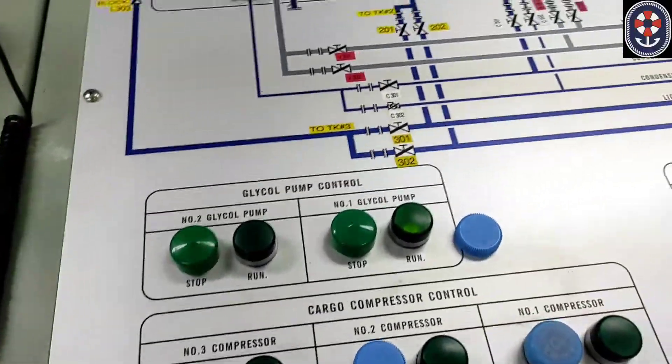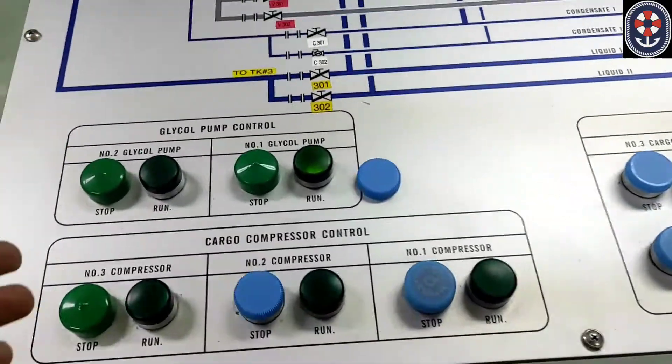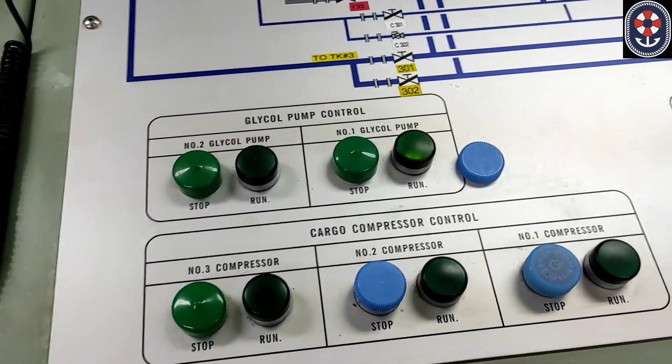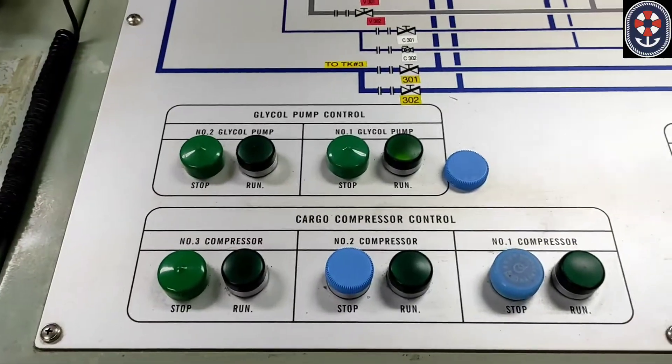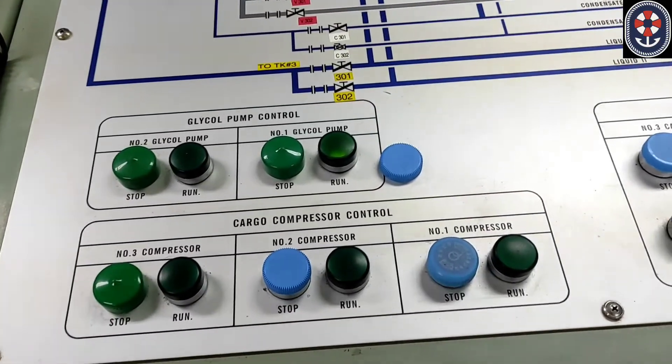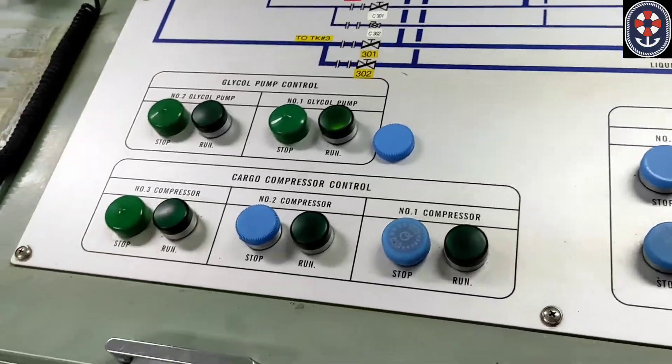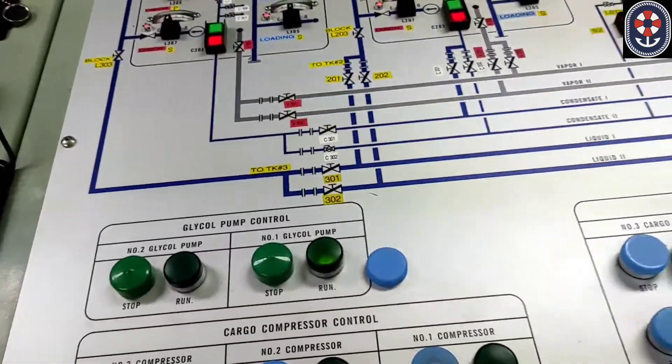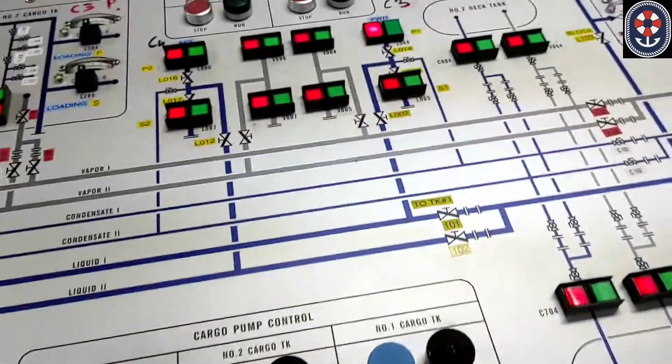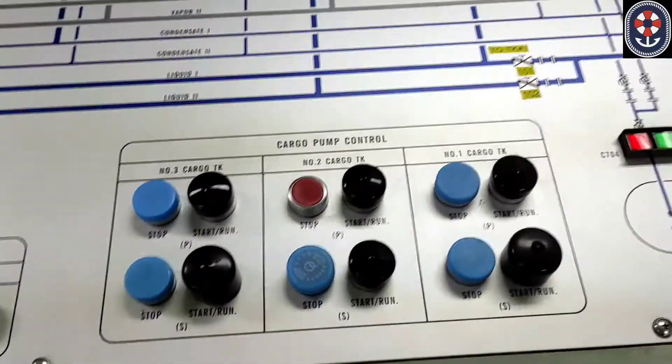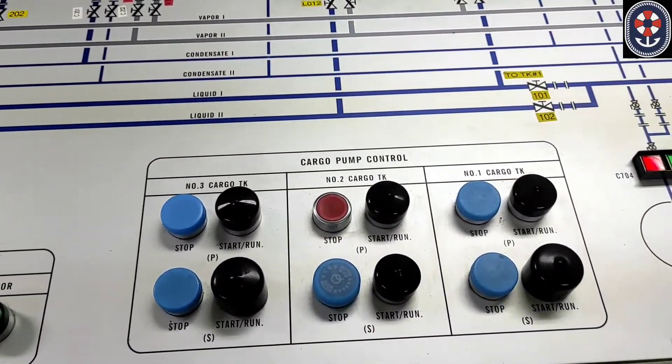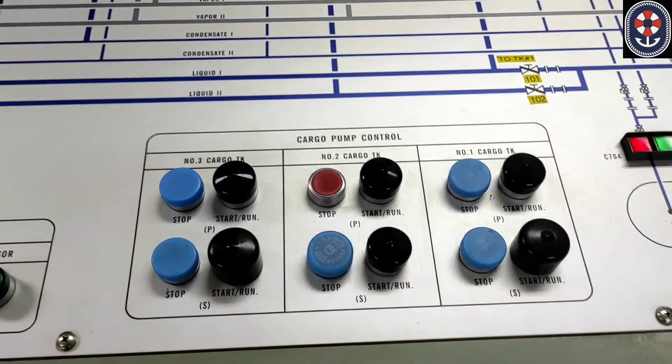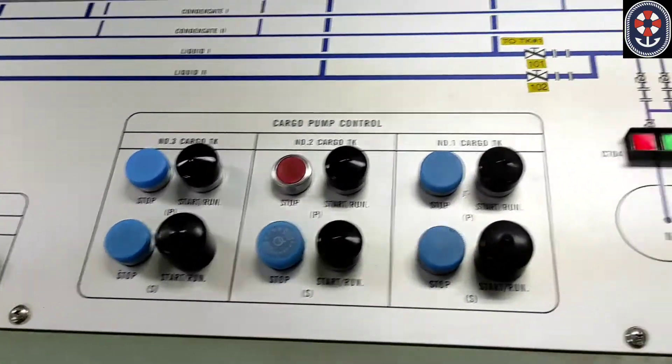We can find a glycol pump, cargo compressor control, which is not in the chemical tankers. So this is the change which we will observe here. Compressors are basically for reliquefaction and everything we use in the gas tanker. I will not go into the detail. And then there is a cargo pump control. We have basically two pumps, port and starboard on each tank, and you can start from there in the CCR.